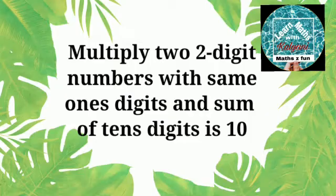How to multiply two 2-digit numbers with the same ones digit and sum of tens digits is 10.